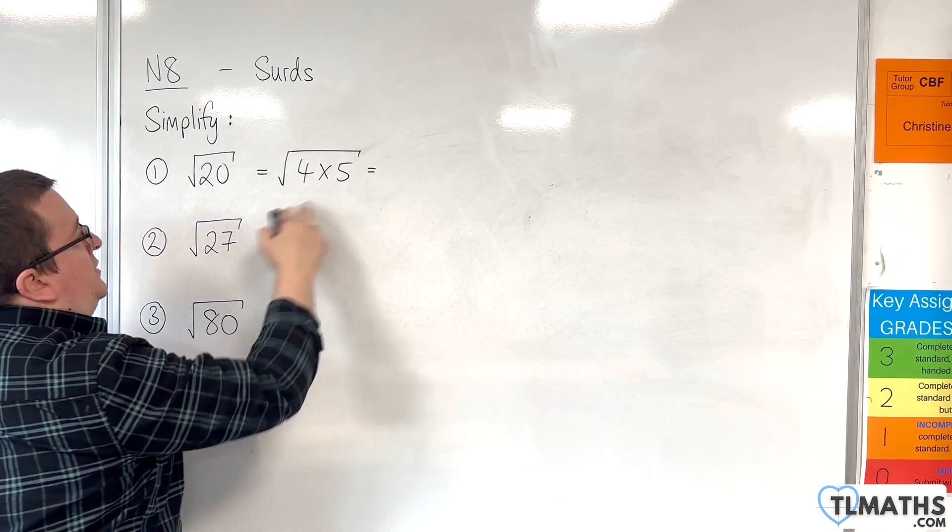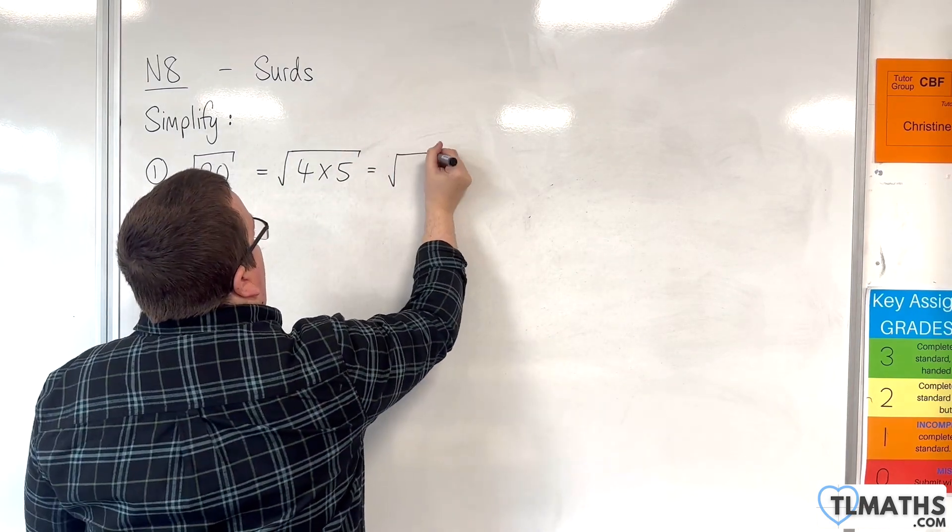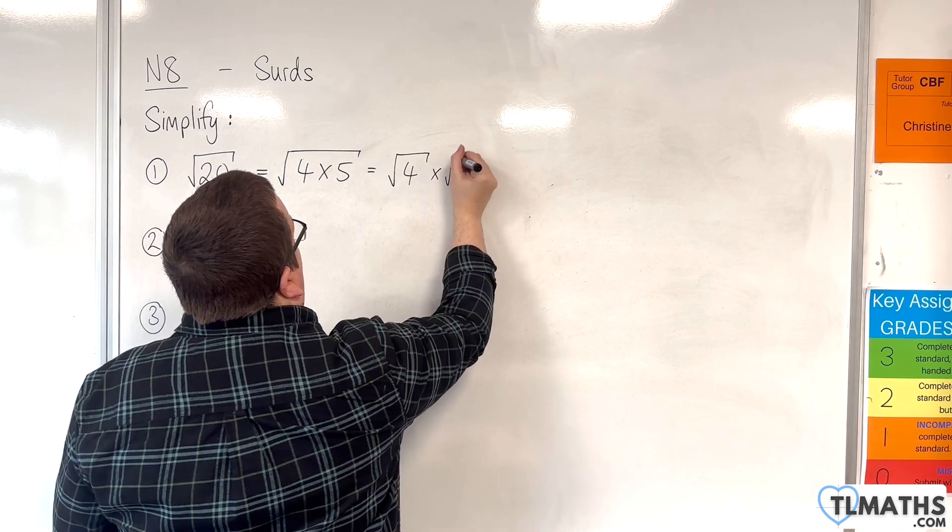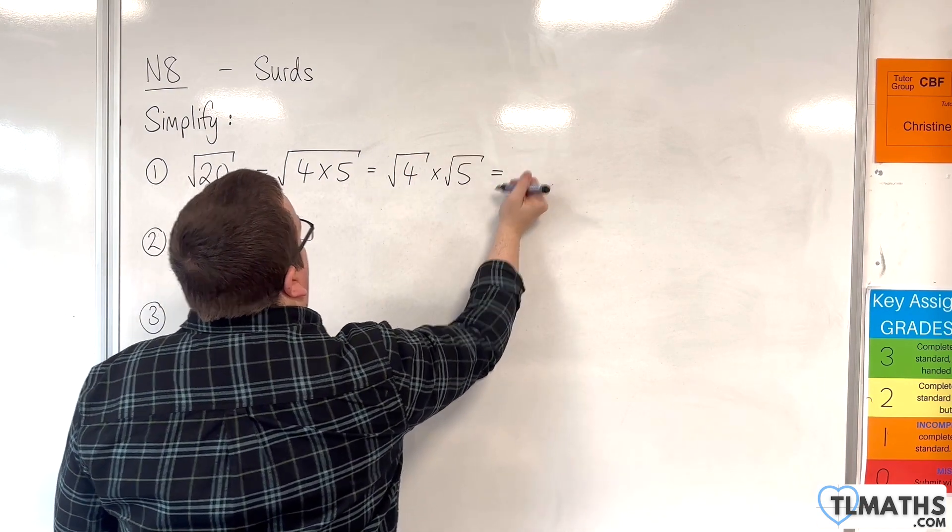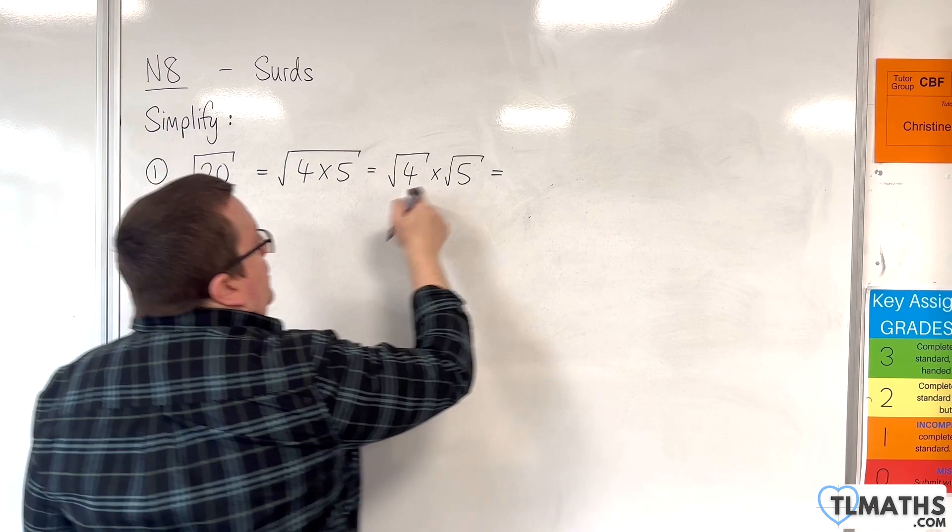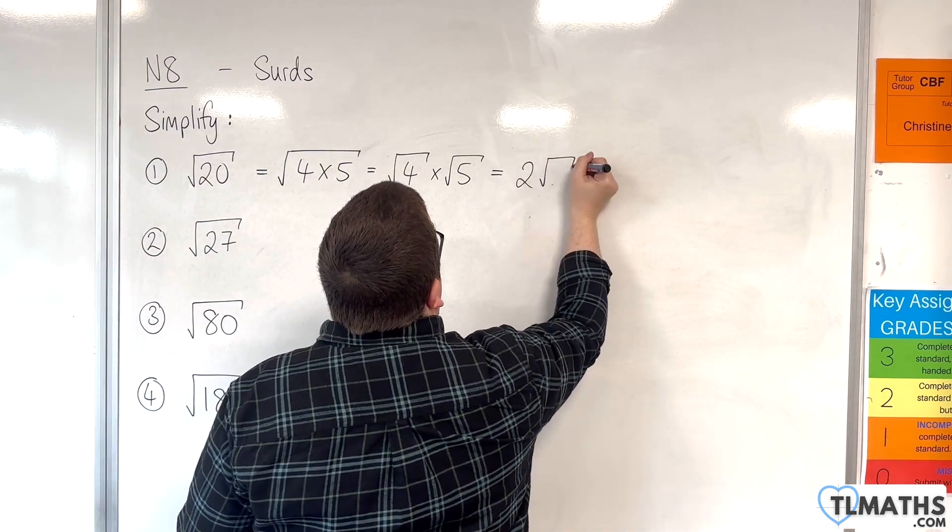Then we can split the surd. So we can write that as the square root of 4 times the square root of 5. The square root of 4 is 2, so we can write this as 2 root 5.